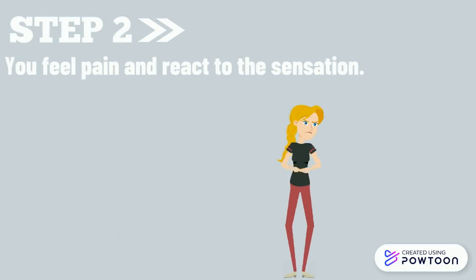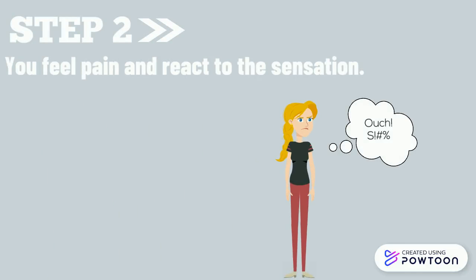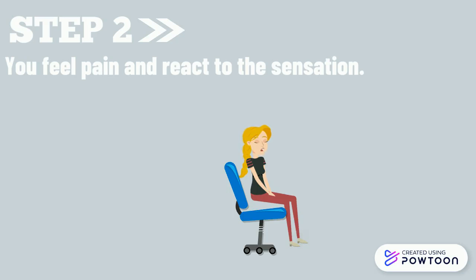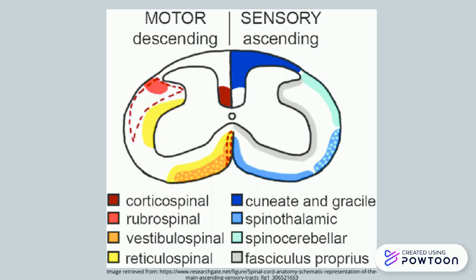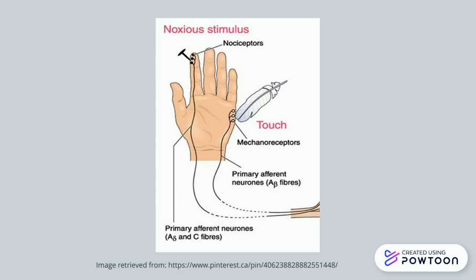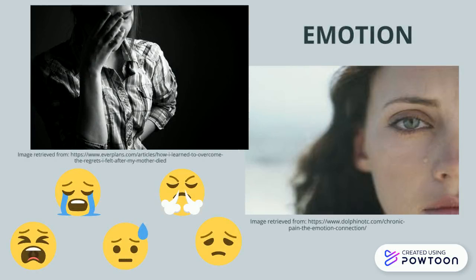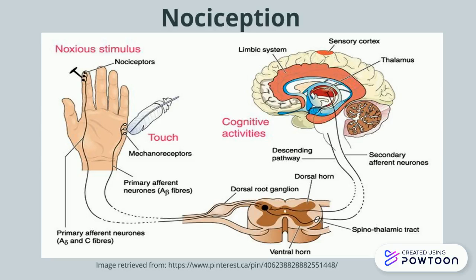Step 2. You feel pain and react to the sensation. Your brain interprets the signal and you react viscerally and emotionally. Step 3. When your spinal cord sends impulses down to the motor neurons, it also sends signals up ascending pathways towards your brain. While painful stimuli are detected by nerves, this information doesn't mean anything emotionally until it reaches the brain and nociception occurs.